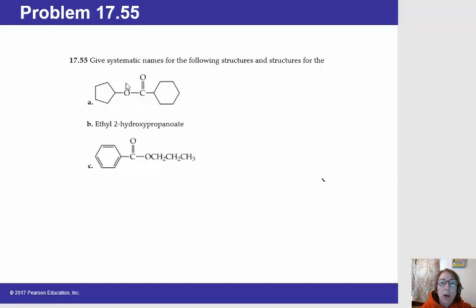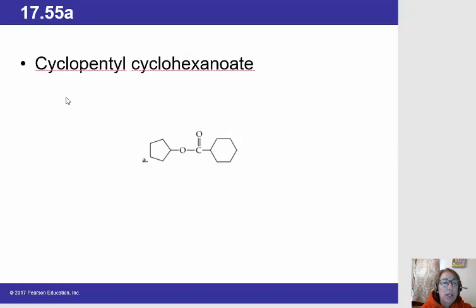So we look at the part that comes from the alcohol, the oxygen singly bonded to an R, oxygen singly bonded to the carbonyl. This is our alcohol part. And this would be cyclopentanol. So our first part is going to be cyclopentyl.